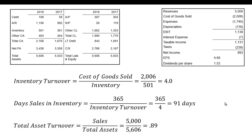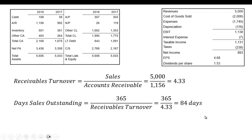For asset turnover, we take sales — which is the same as revenues here — of 5,000, divided by total assets of 5,606, and we get 0.89. Then for receivables turnover, it's sales divided by accounts receivable: sales of 5,000 divided by accounts receivable of 1,156 gives us 4.33. Days sales outstanding is 365 divided by 4.33, so around 84 days.